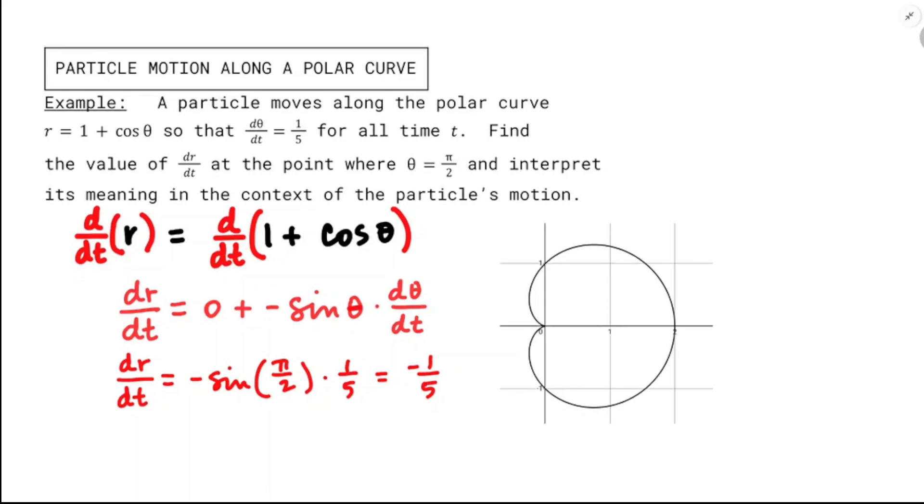All right, and now you may have been thinking earlier, it said interpret its meaning in the context of the particle's motion. And I just kind of wanted to come back at the end and do this, and then say something else about the next example too. But what I'm going to point out about this one here is that, θ equals π/2, this is the graph of r equals 1 plus cosine θ, that's a cardioid. And it's saying that dθ/dt is 1/5.